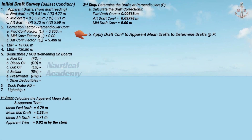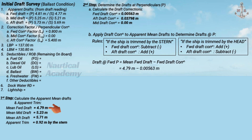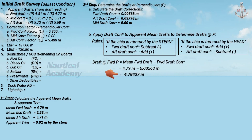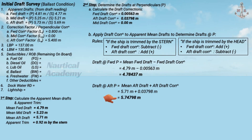Next, apply the draft corrections to the apparent mean drafts to determine drafts at perpendiculars. The draft at forward perpendicular equals the mean forward draft minus the forward draft correction — we subtract because the ship is trimmed by the stern. The draft at forward perpendicular is 4.78437 meters. For the draft at aft perpendicular, we add the aft draft correction, giving 5.74798 meters. The draft at midships remains the same as the apparent mean midship draft since no correction is applied.